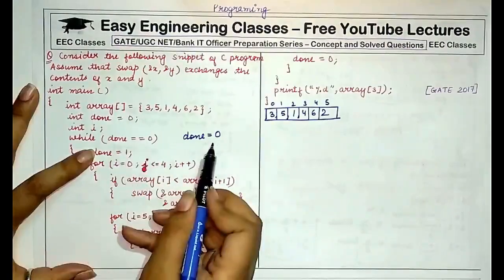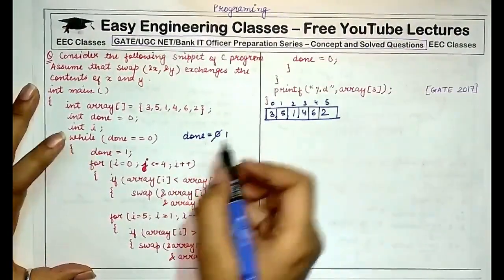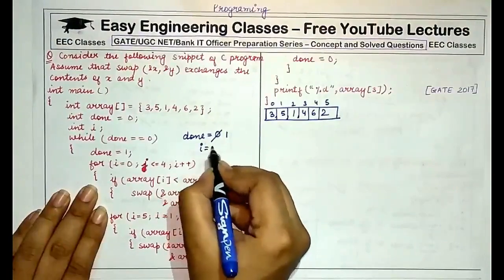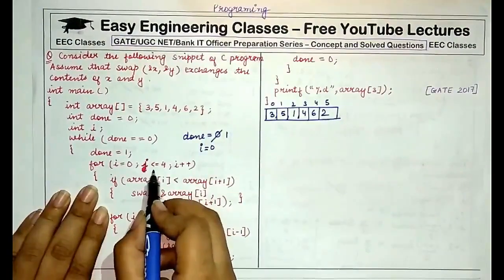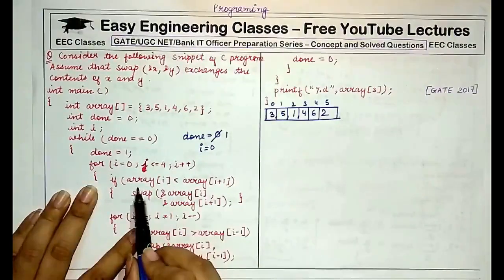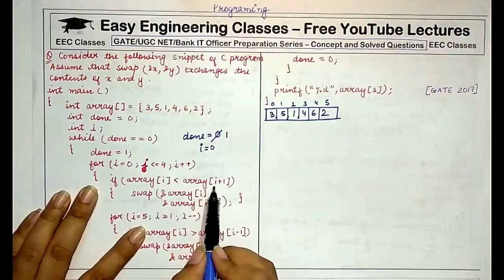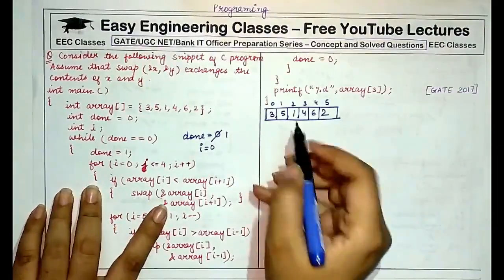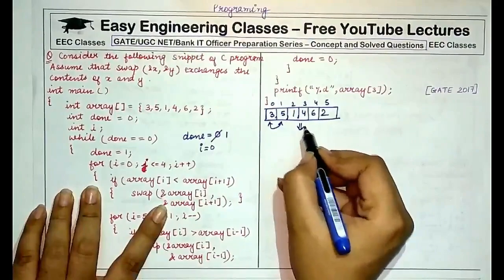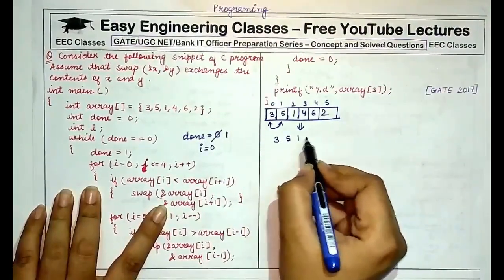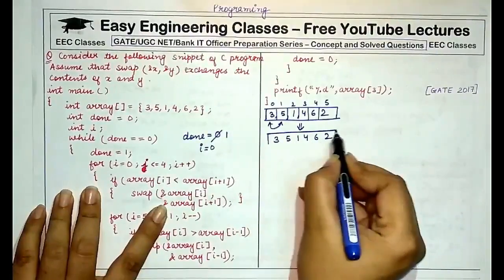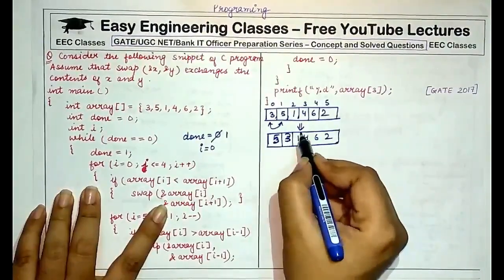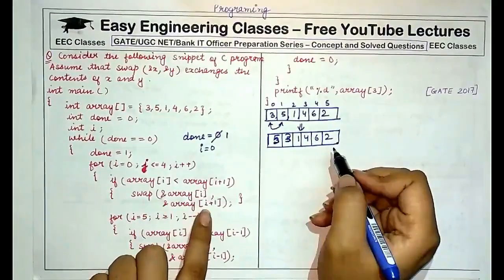When we enter the loop because done equals zero, the value of done is changed to one. The first for loop sets i equal to zero. If i is less than or equal to four, we check: is array[i] less than array[i+1]? Array[0] is less than array[1], yes. So we swap both these values. The array now becomes 5, 3, 1, 4, 6, and 2.